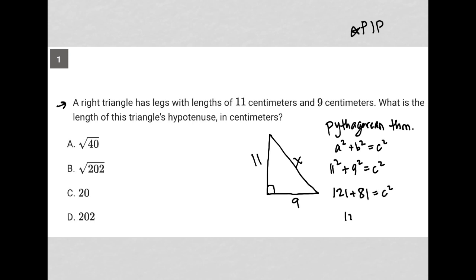When I add 121 plus 81 together, I get 202. So I get 202 equals c squared.